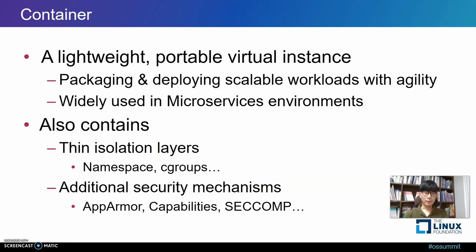From a security point of view, containers have a thin isolation layer. They rely on the namespace and cgroup mechanism provided by the Linux system. The namespace provides containers with process, network, and IPC space separate from the container host. The cgroup restricts the resources on the host that containers could use. Those isolations create minimal barriers between containers or between containers and the container host.